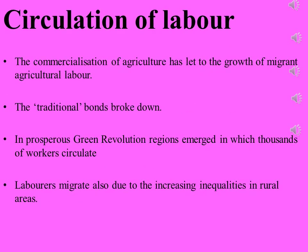Another topic is on page number 67 of your NCERT books — 4.5 Circulation of Labor. Another significant change in rural society linked to commercialization of agriculture has been the growth of migrant agricultural labor, as traditional bonds of patronage between laborers or tenants and landlords broke down.